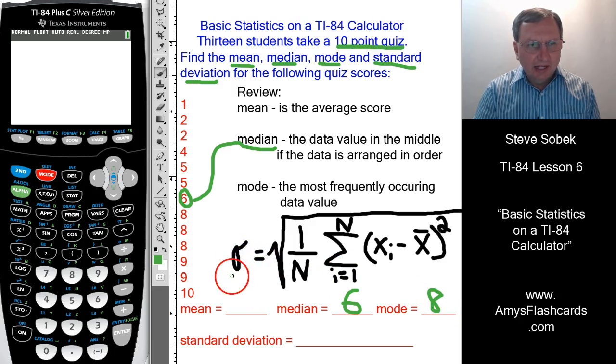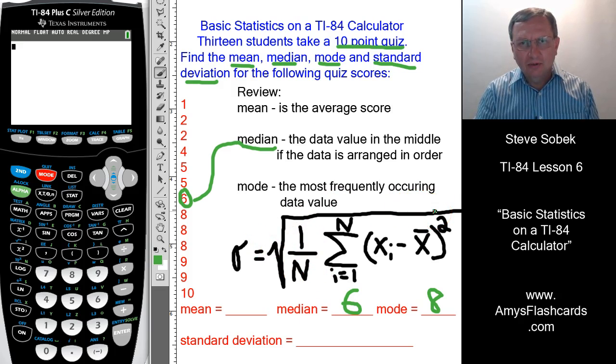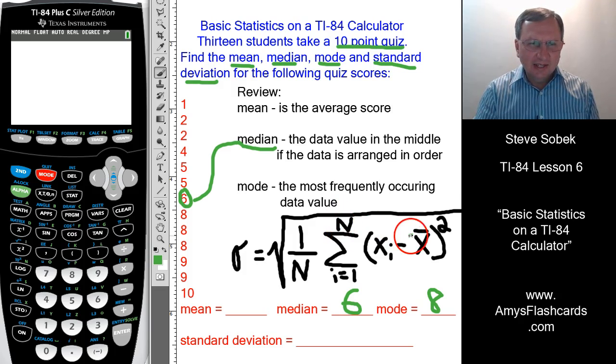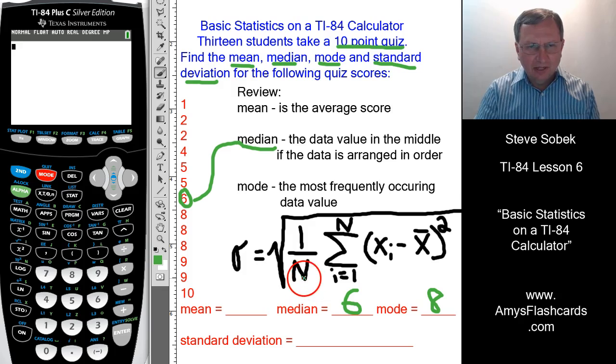And the standard deviation, we use this lowercase Greek symbol, sigma, to denote the standard deviation. And this is the formula. Basically, in words, the standard deviation is the square root of the average of the squares of the deviations of the data values from the mean. That's quite a mouthful. So n is the number of data values. That's why we define the average. We add a bunch of stuff up and divide by 13.